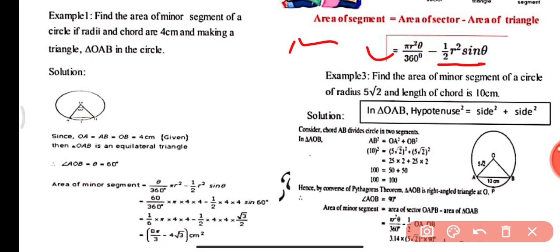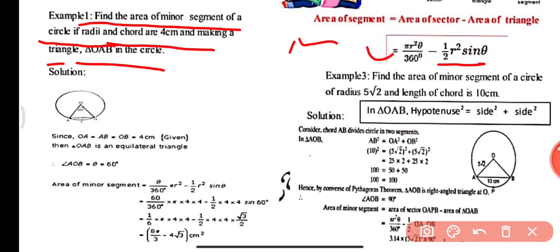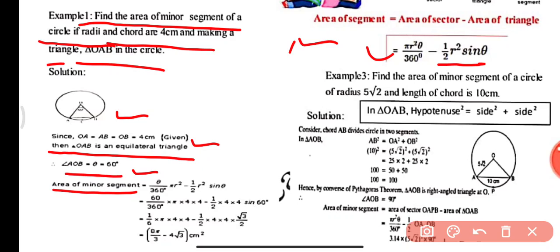Example 1: Find the area of the minor segment of a circle where the radius and chord are both 4 cm, forming triangle OAB. Since OA, OB, and AB are all equal, triangle OAB is equilateral, so angle AOB = 60°. Area of minor segment = (θ/360)×πr² − ½r²sinθ. Substituting all values, we get the area as (8π/3 − 4√3) cm².